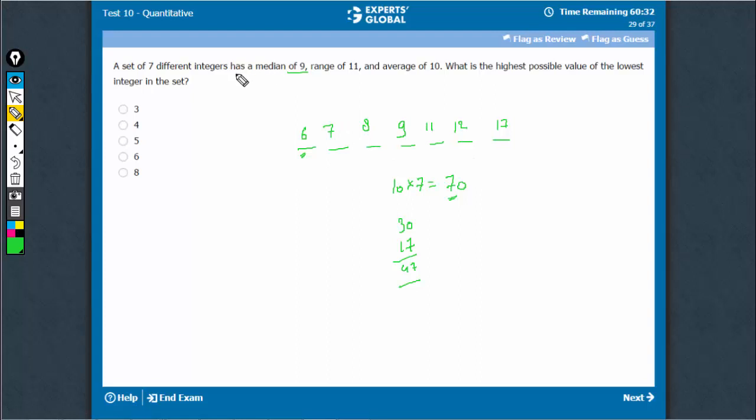Let's just cross-verify that all those conditions are being satisfied. 7 different terms. Median is 9. Okay. Range is 11: 6 and 17, 11. Average is 10: 13, 21, 30, 41, 53, 70. Everything is being satisfied. 6 is a possible value. That's the right answer.